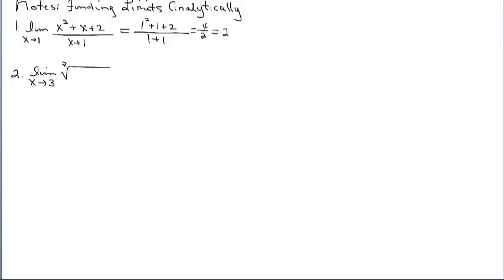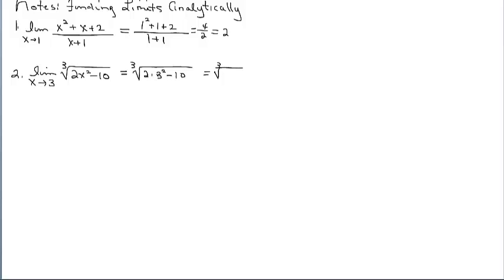Let's work with a radical, a cube root. What are the y-values going to as x approaches 3? We don't have a superscript, so we just plug in 3 and drop the limit statement. Performing the computations: 3 squared is 9, 9 times 2 is 18, 18 minus 10 is 8. The cube root of 8 is 2 — nice. If it were 9, the cube root of 9 can't be simplified; the answer wouldn't be very nice, but it's still what it is. No problem so far.